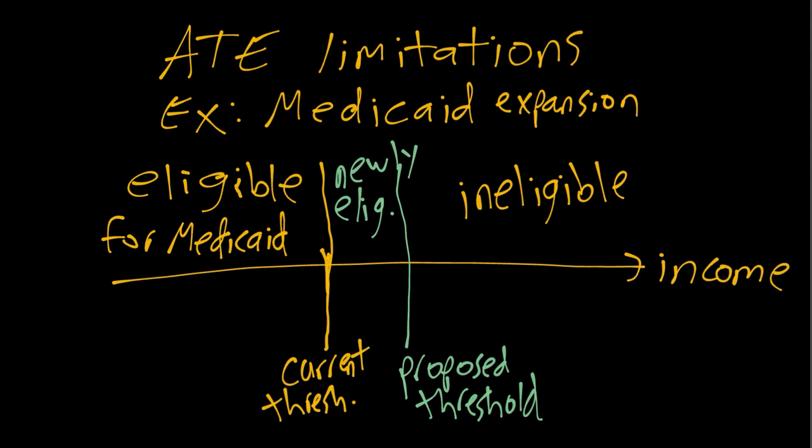The ATE just tells us about comparing treated and untreated individuals. We could also imagine that the decision to apply for Medicaid may be different for people who are already eligible versus the newly eligible individuals. All that to say, it can be important to try to model that take-up decision, beyond just asking what the average treatment effect is.